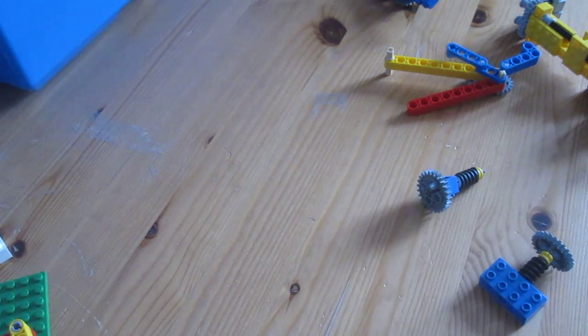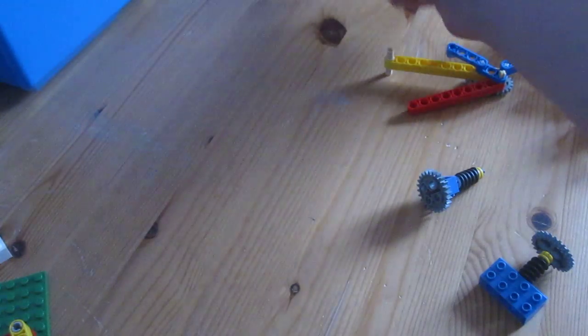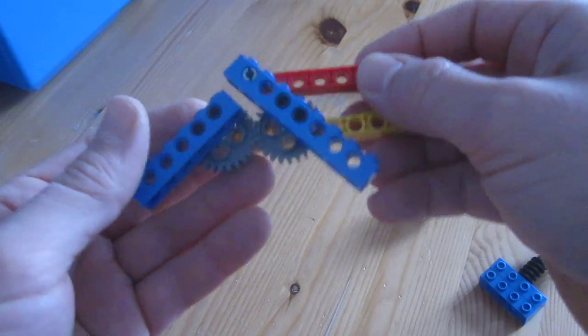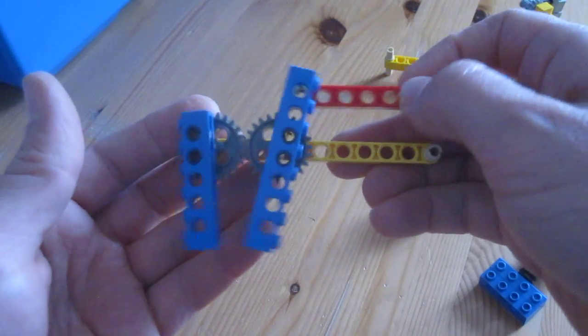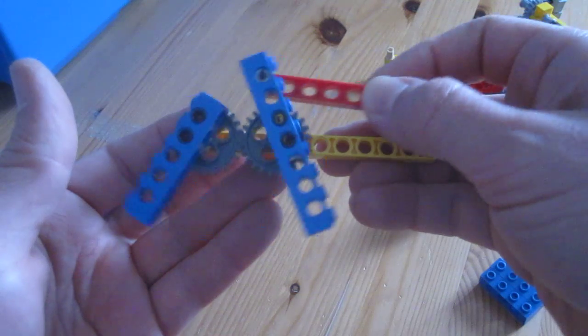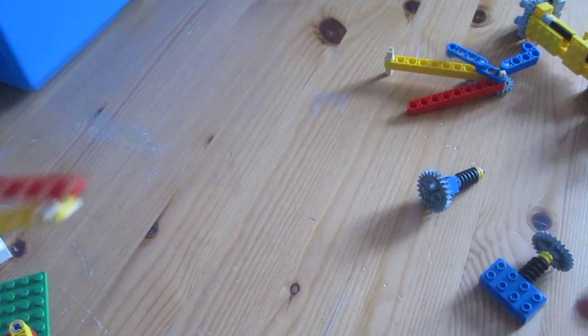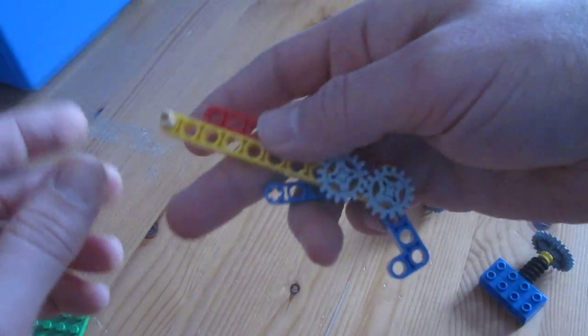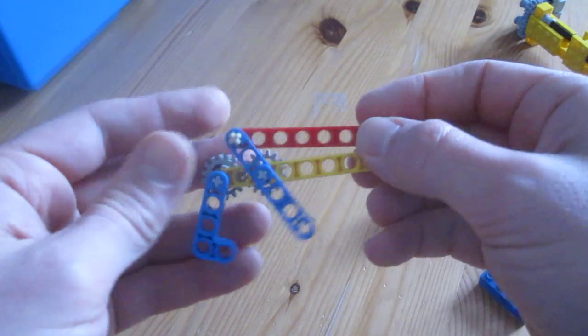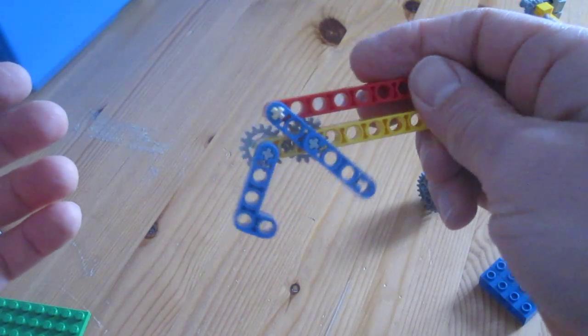And you can take that one stage further if you use gears. So this is the same again with the red beam pulling the blue but I've got two gears in there which are effectively pulling it together. And a little tidier version of that even still is if you use the smaller gears here. It's effectively the same thing.